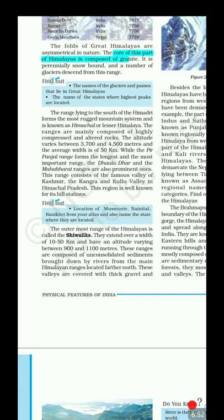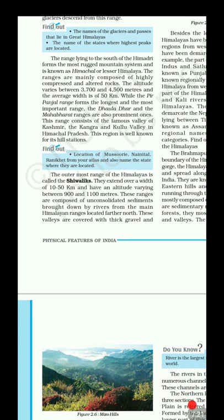The Himachal (Lesser Himalayas) are the most rugged, ranging from 3,700 to 4,500 meters. The Pir Panjal range forms the longest and most important range here. The Dhaula Dhar and Mahabharat ranges are also important. This range consists of famous valleys such as Kashmir, Kangra, and Kullu valley in Himachal Pradesh, and the region is well known for its hill stations.